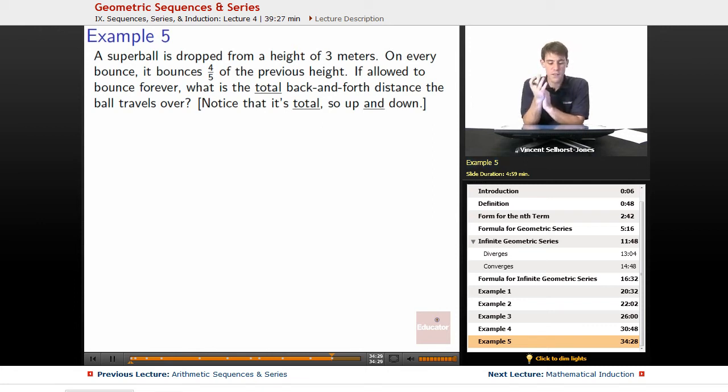On every bounce, it bounces four-fifths of the previous height. If allowed to bounce forever, what is the total back-and-forth distance the ball travels over? Notice that's total, so it's up and down.